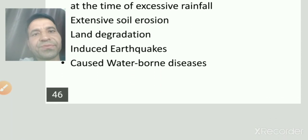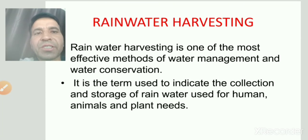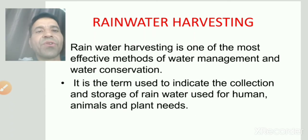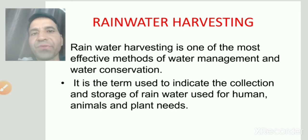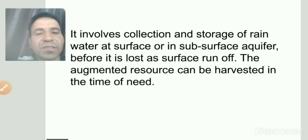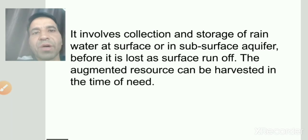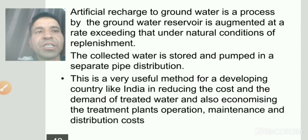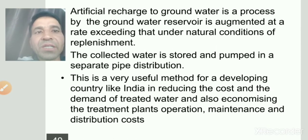Rain water harvesting is one of the most effective methods of water management and conservation. It is a term used to indicate the collection and storage of rainwater by human beings for animals and plants for our day-to-day needs. हमारे देश में rainwater harvesting अलग-अलग तरीकों से की जाती है। Artificially इसको store करके groundwater को recharge करते हैं, जिससे water level पर positive effect होता है।